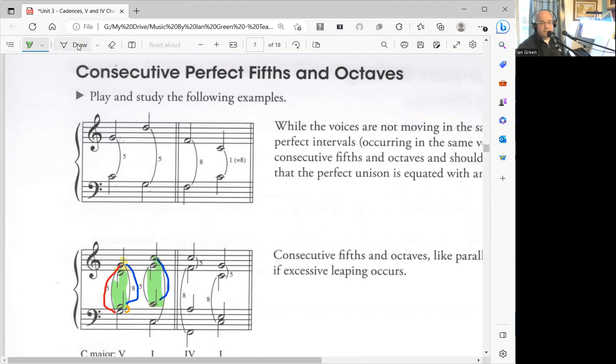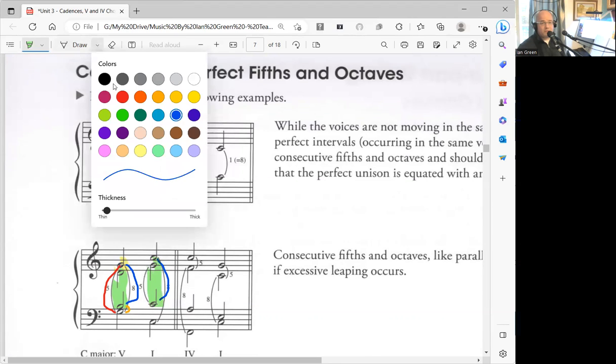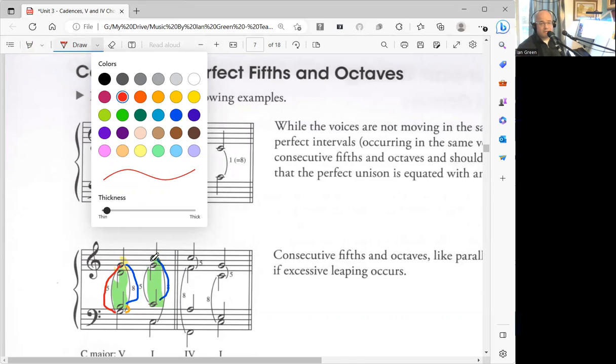Now what we can do is go to the next one. So let's check soprano and bass intervals. Now here we have an octave, G to G, and an octave, C to C. So there, that's an error, because we have a parallel interval from the G to G going to the next chord from the C to C, soprano to bass.